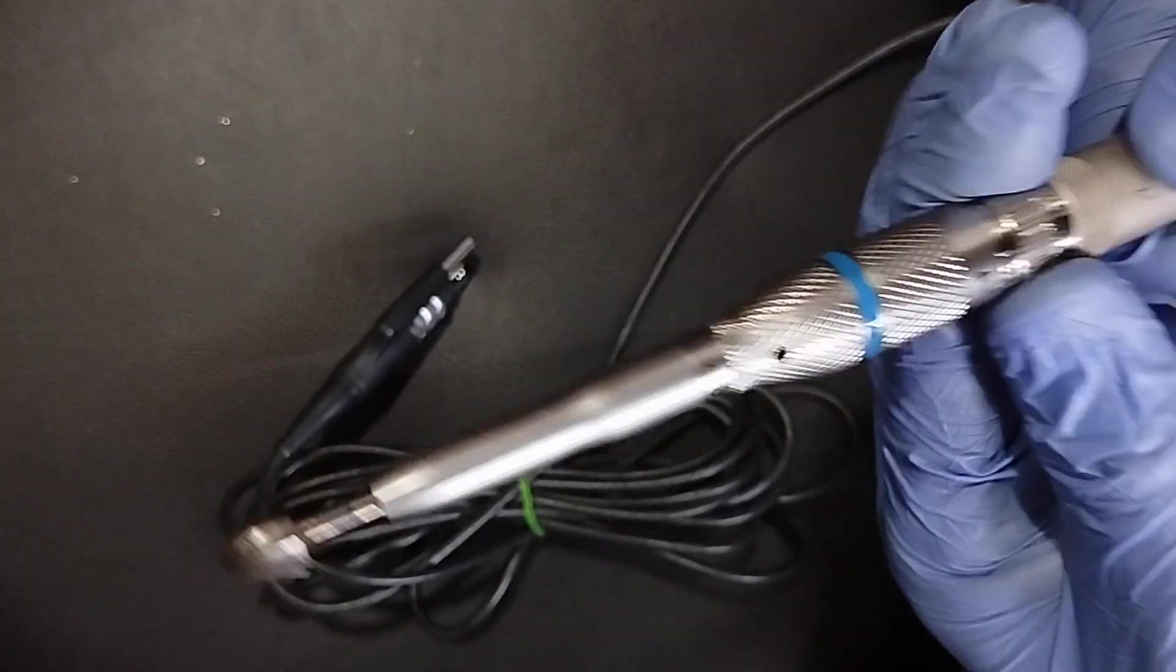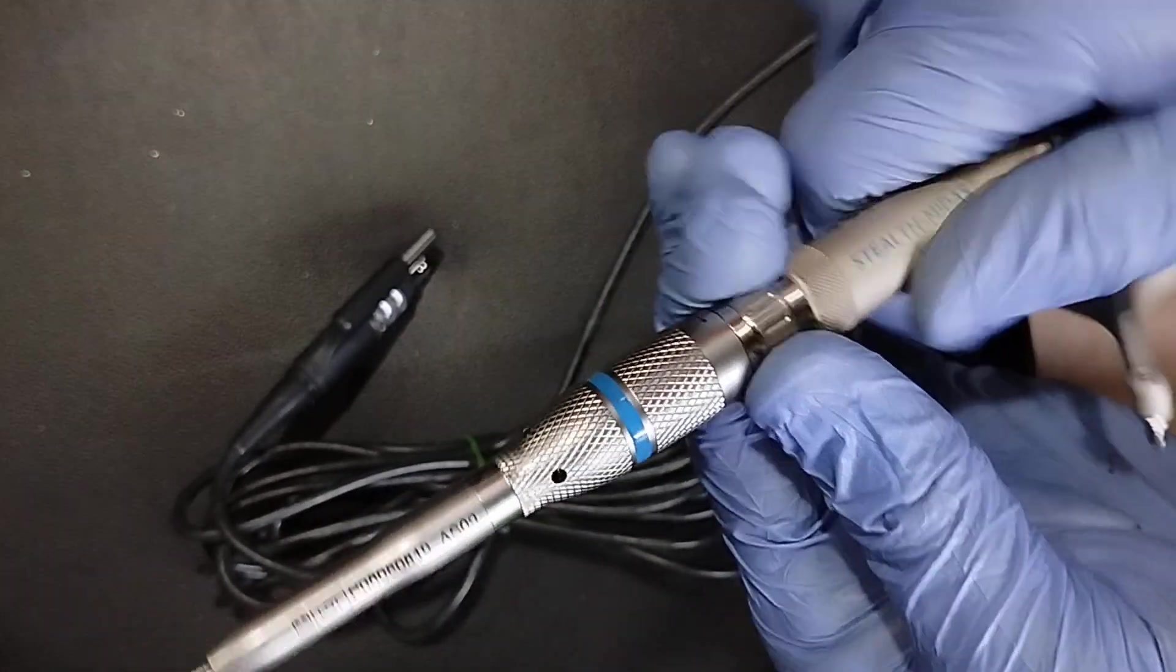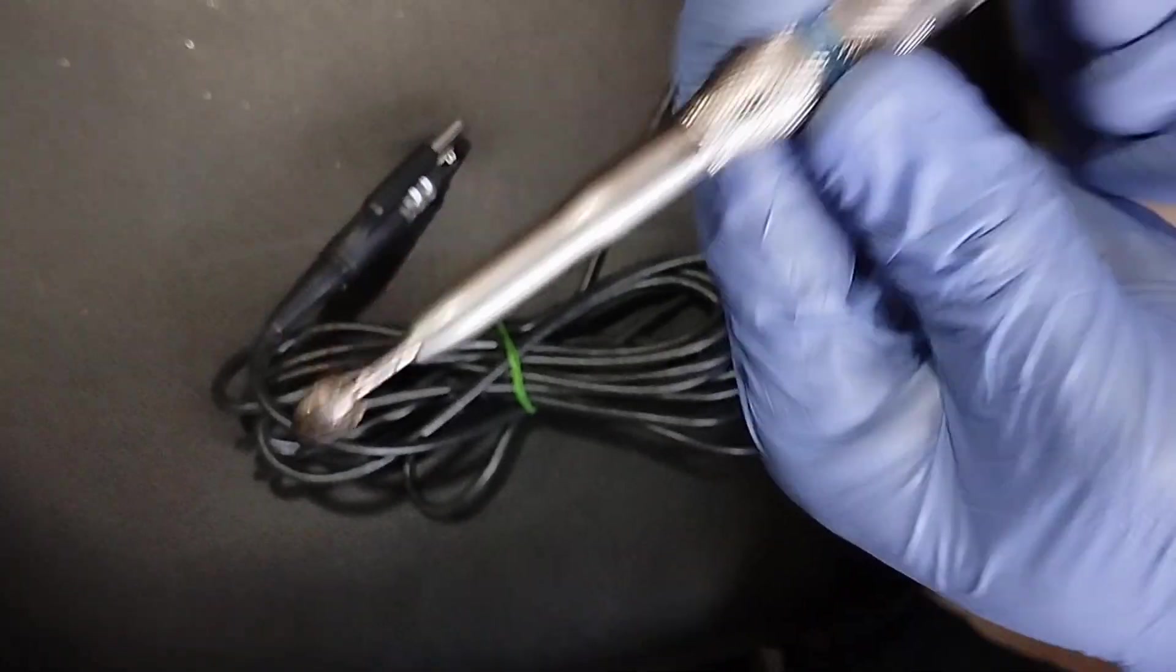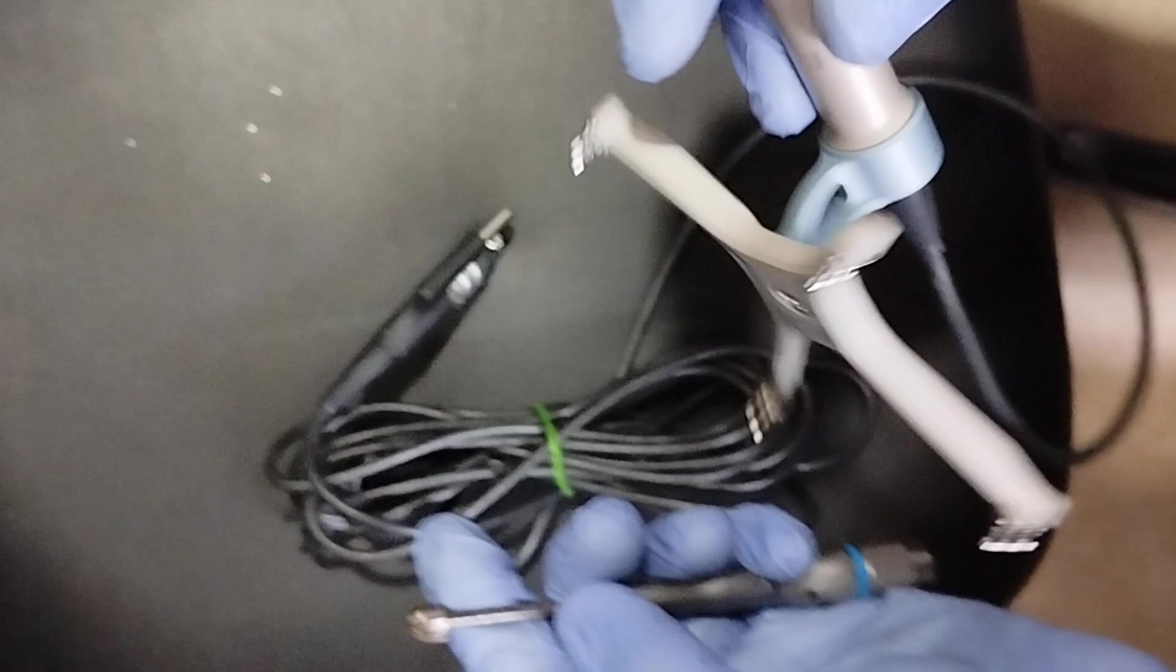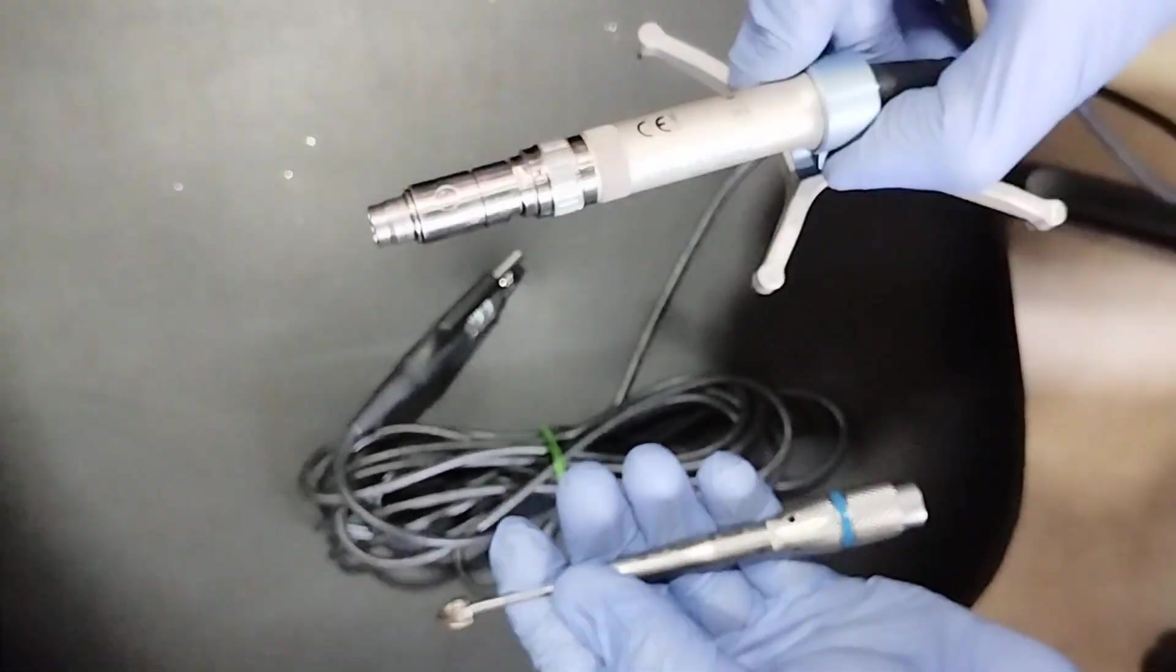So when you want to unlock the attachment, you have to unlock it in this direction. Same anti-clockwise, you have to rotate it fully, and then you have to one, two, then you have to take out. So this is the lock and unlock position for Stealth Midas motor. Thank you.